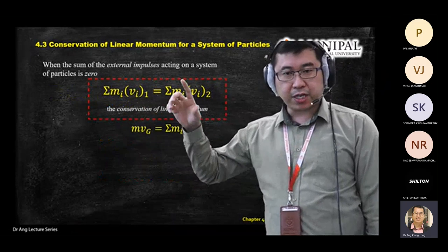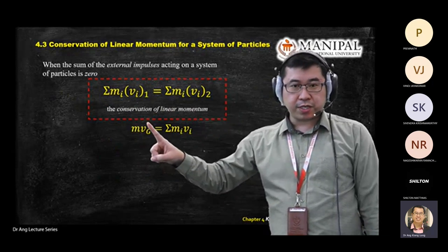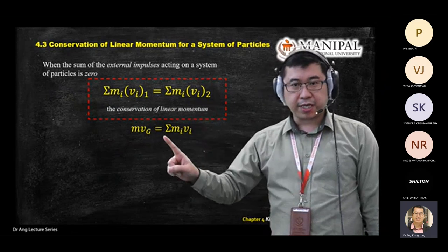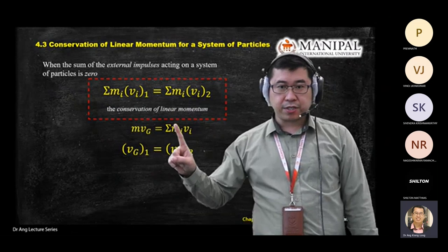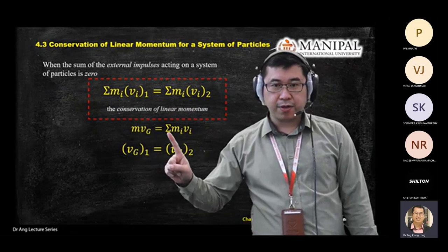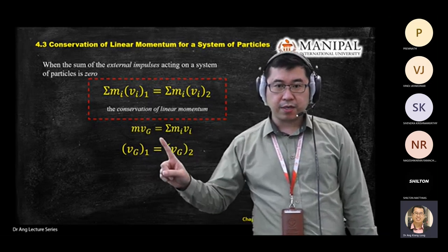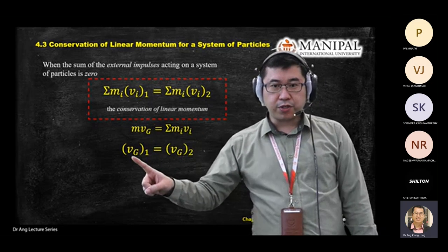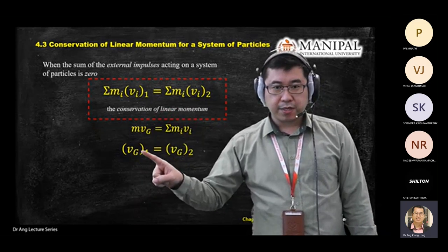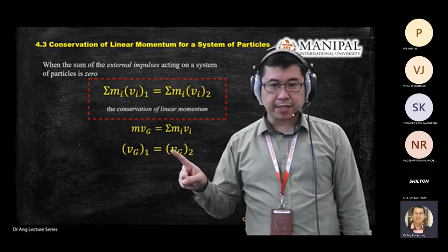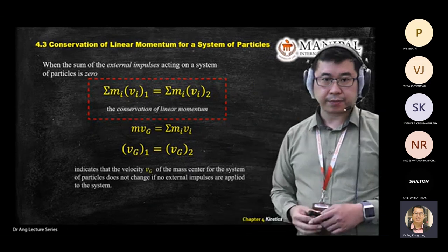When you have a system of particles, we can write: M times v_G equals the sum of momentum in the system. Mass doesn't change, so mass before equals the sum of m_i, which you can cancel. So v_G equals v — meaning your velocity of the center of gravity point will be the same before and after the incident when you have conservation of momentum.